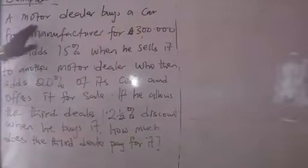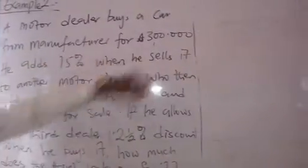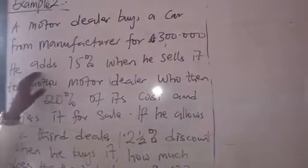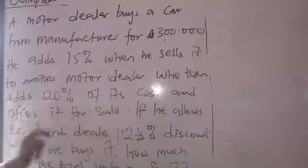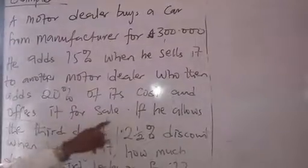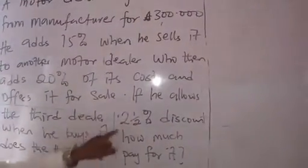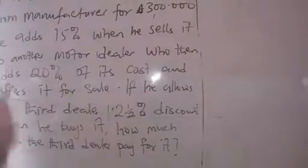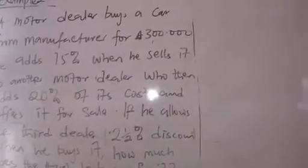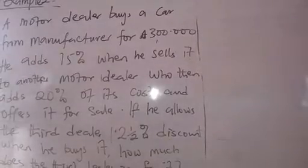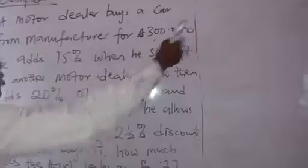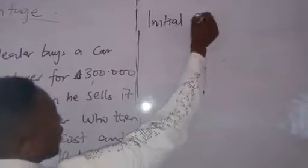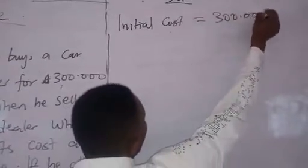Question 2: A motor dealer buys a car from a manufacturer for 300,000 Naira. He added 15% when he sells it to another motor dealer, who then adds 20% of its cost and offers it for sale. If he allows the third dealer 12.5% discount when he buys it, how much does the third dealer pay for it? There are three persons in this question. The first person is the motor dealer who buys the car from the manufacturer for 300,000 Naira. That is the initial cost of the car.